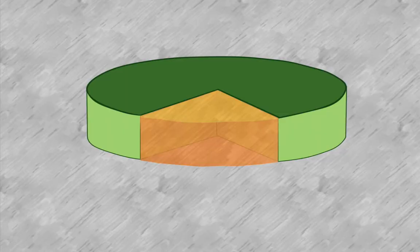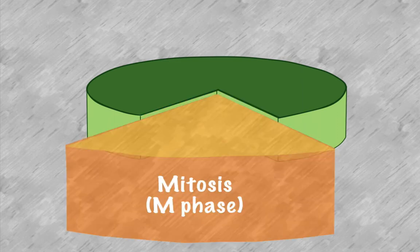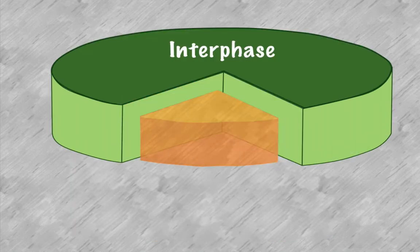They do this via a process called the cell cycle, which we have shown here as a kind of pie chart. There's different aspects to this cycle. The first one we're going to look at is mitosis, the M phase. The larger green one is the interphase stage, which takes the longest.